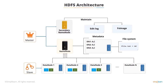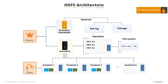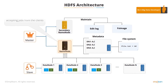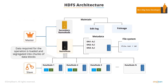Broadly, HDFS architecture is known as the master and slave architecture. A master node, that is, the name node, is responsible for accepting jobs from the clients. Its task is to ensure that the data required for the operation is loaded and segregated into chunks of data blocks.